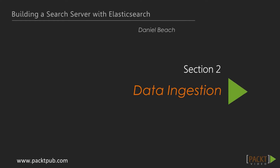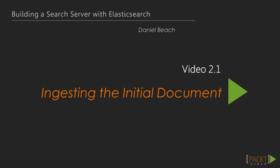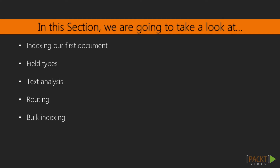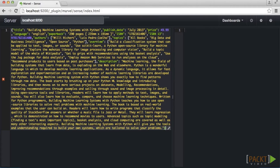In the last section, we set up a working Elasticsearch instance. In this video, we will begin adding real data to our index. Over the remaining videos in this section, we will also cover field types, how Elasticsearch classifies a given field, text analysis, how that field is broken down into searchable tokens, routing, how Elasticsearch determines which shard to place the document in, and finally bulk indexing — or how to batch large lists of updates into a single command.